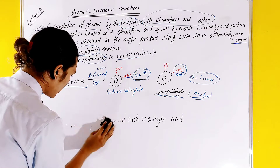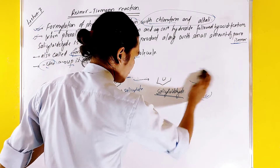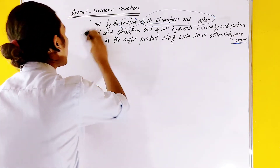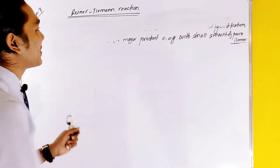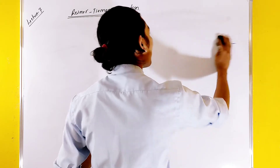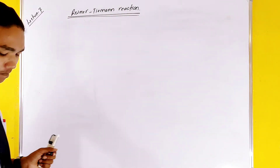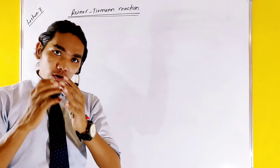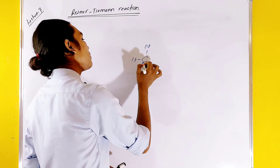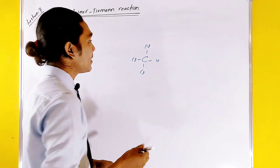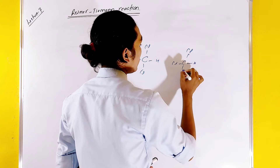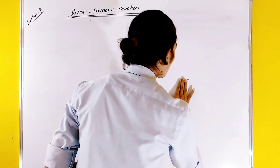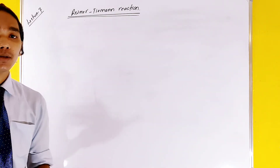Let's talk about the mechanism. We will discuss the mechanism involving chloroform, also called carbon trichloride. Chloroform is CHCl3 — we will not be confused about this. We will use these terms clearly and this will not be a question.